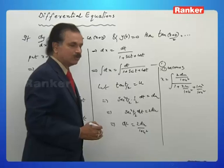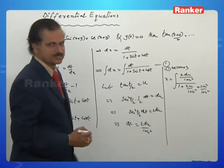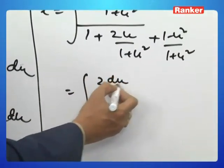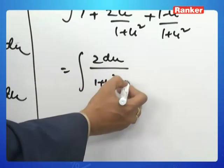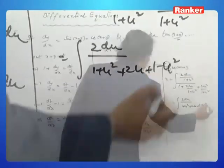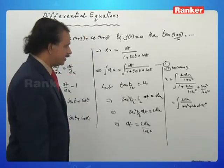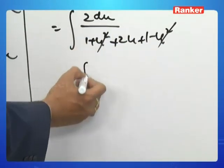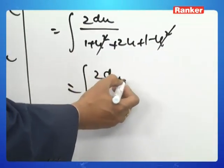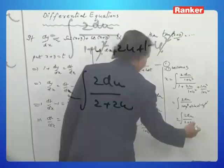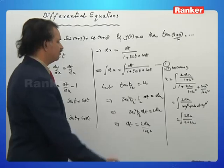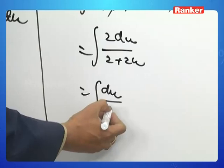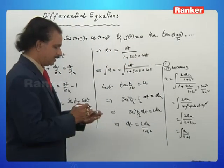The u² terms cancel automatically. We get integral of 2du over (2 plus 2u), and the 2 cancels, leaving integral of du over (u plus 1).